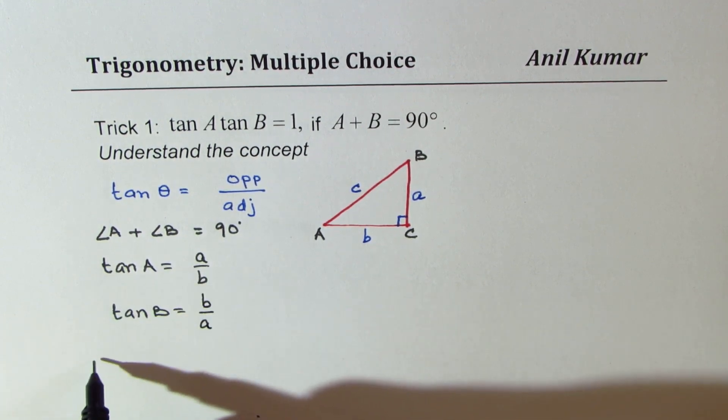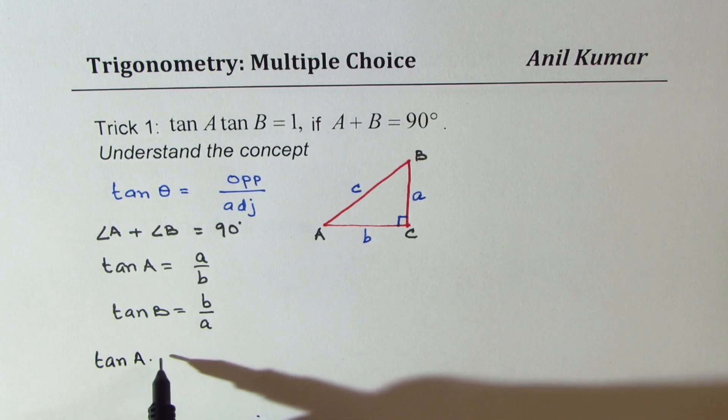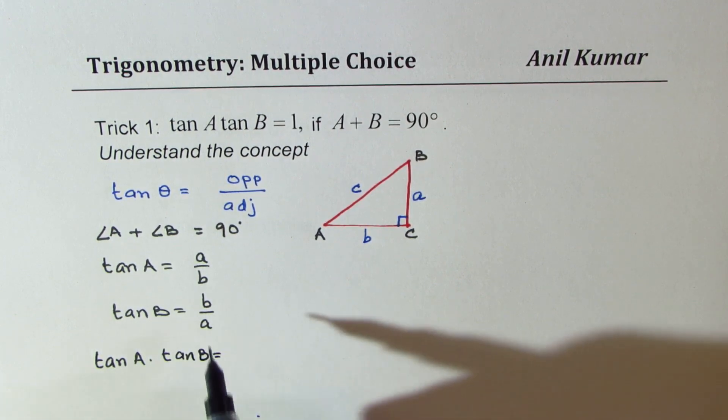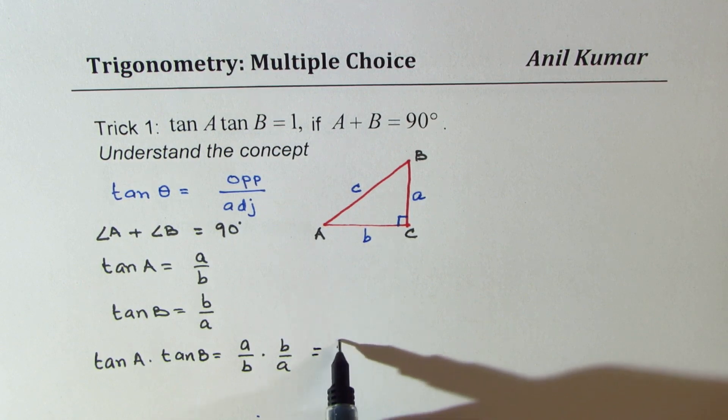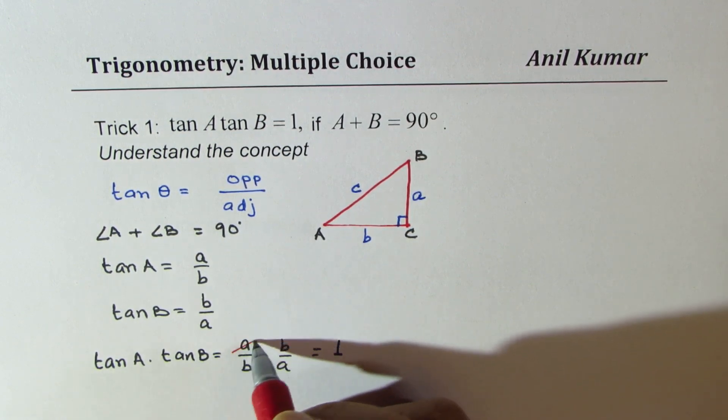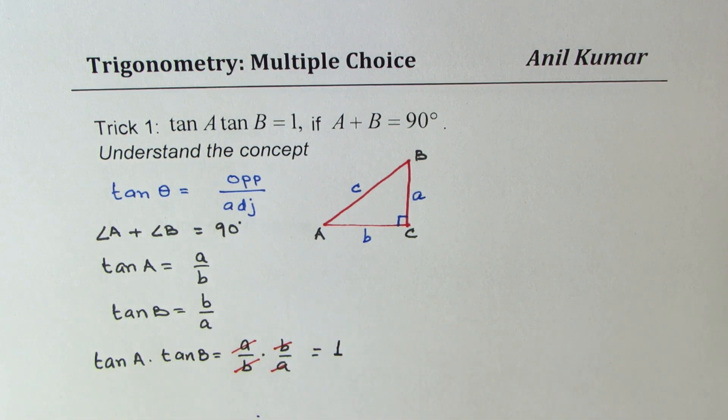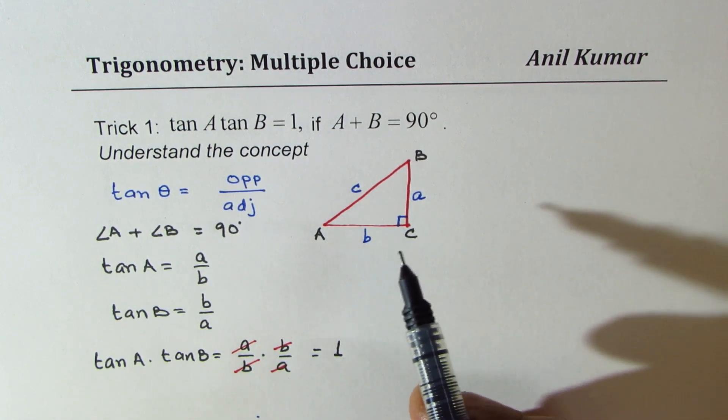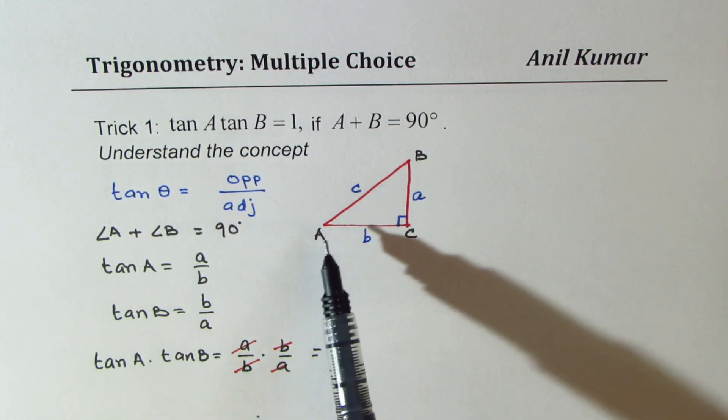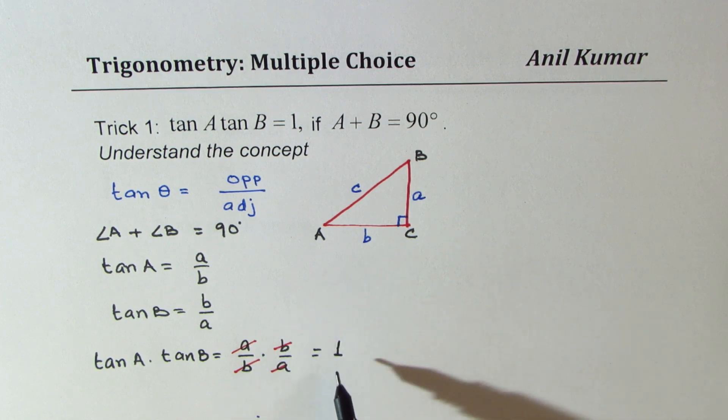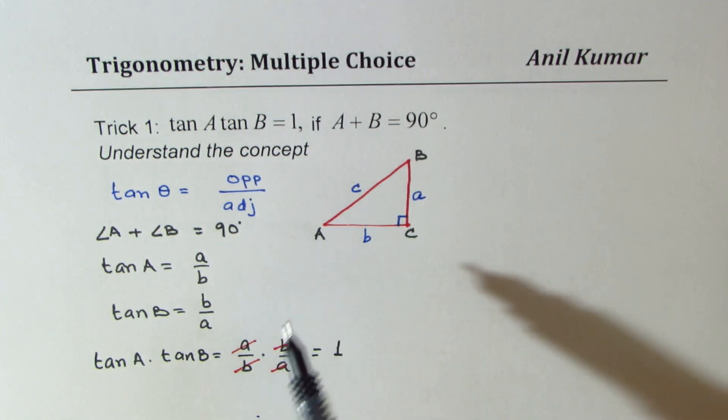So what is their product? That is to say, what is tan A times tan B? It is product of these two, which is a over b times b over a. Clearly, that is equal to 1. A cancels with a and b with b. Do you see that? So it is a very simple, straightforward proof. So I hope the concept is clear, and it is easy to remember. So product of tan A and B will always be equal to 1, only if A plus B is 90 degrees.